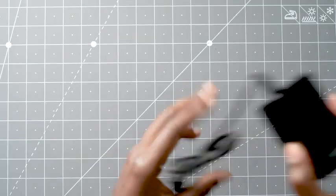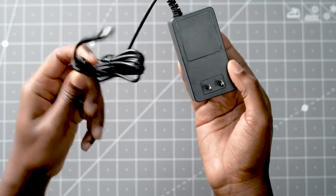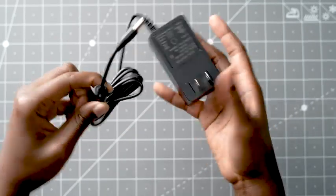Lastly, you have the wall brick that you charge the unit with. That's about it. Now let me show you one example of how I use this battery station.